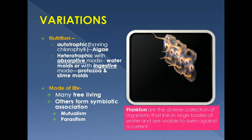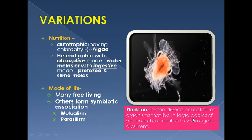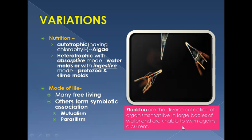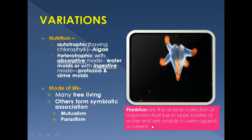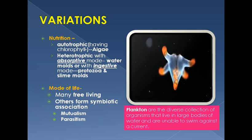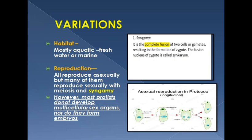Planktons are free-living protists — a diverse collection of organisms that live in large bodies of water and are unable to swim against the current, so they move along with water currents. The majority of protists living in water and oceans are basically planktons. Regarding their habitat, they are mostly aquatic and may be found in fresh water or sea water, which is called the marine habitat.